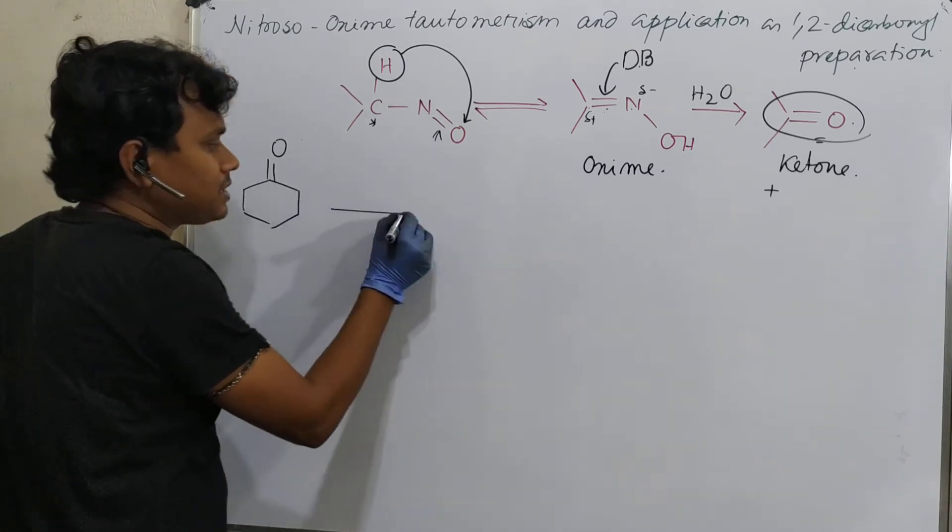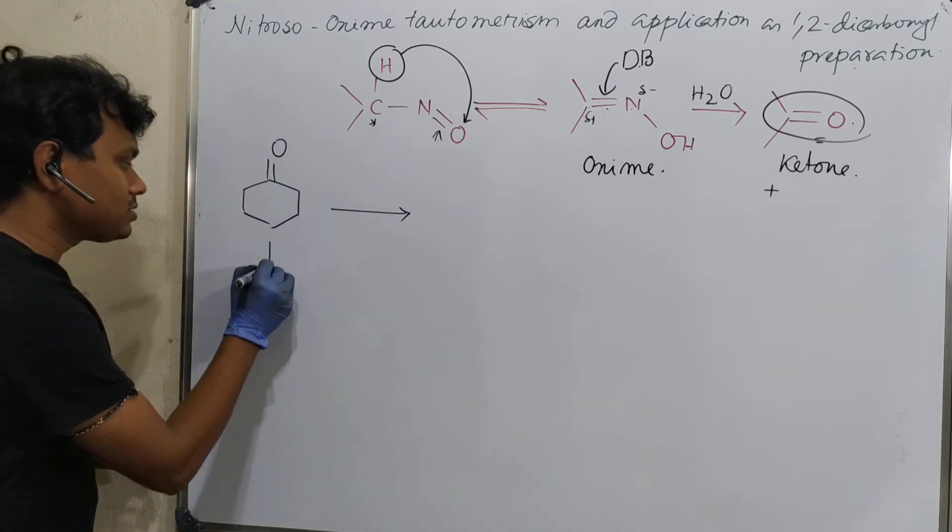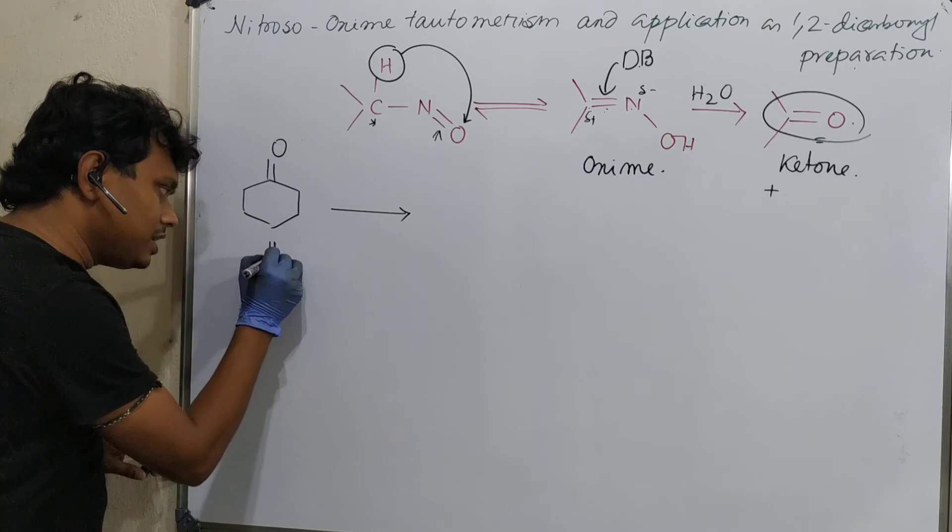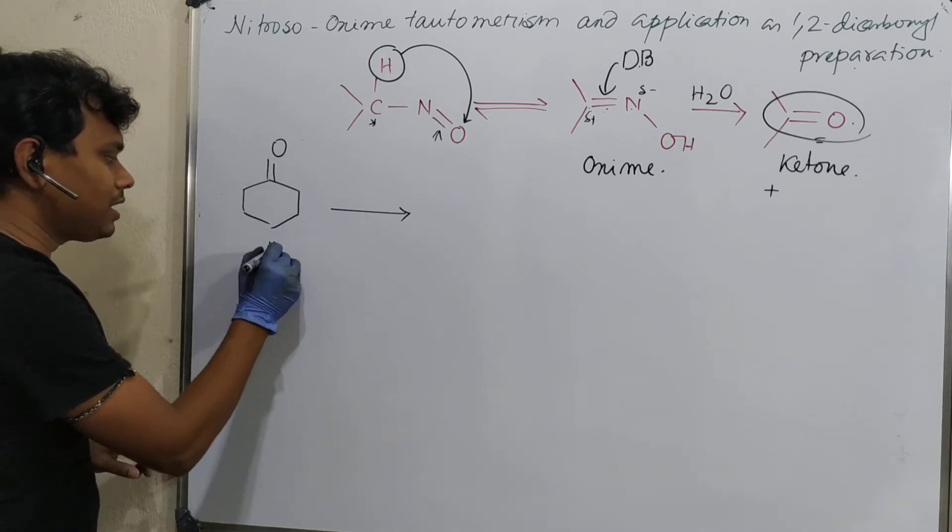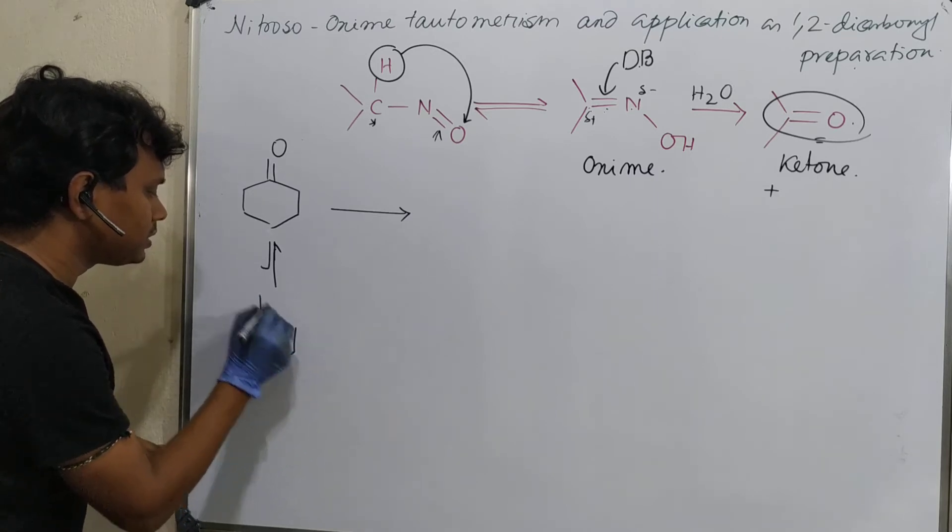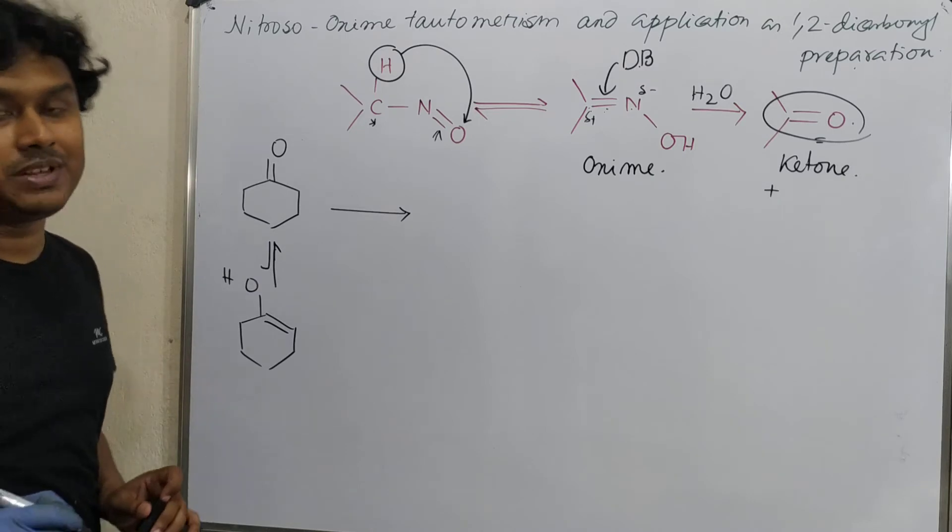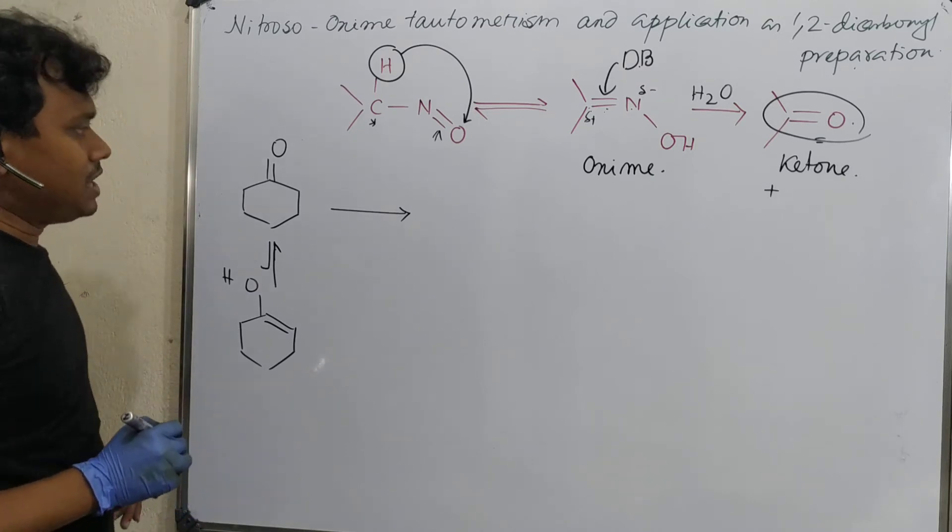Now what happens? In presence of acid, we know it undergoes enolization. You may consider this, although the equilibrium prefers to remain in the keto side. So this is the enol. I have already discussed about this keto-enol, Dr. Medina, in some previous video. Please visit if you want to learn.